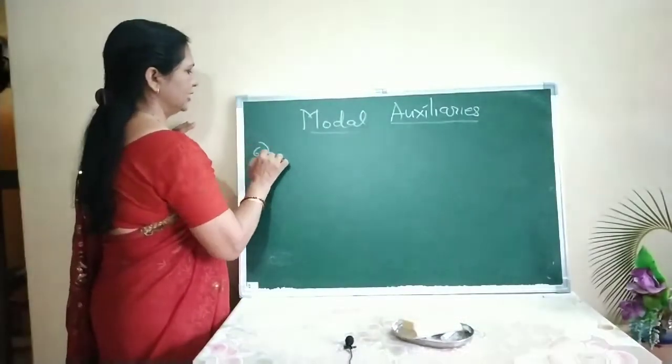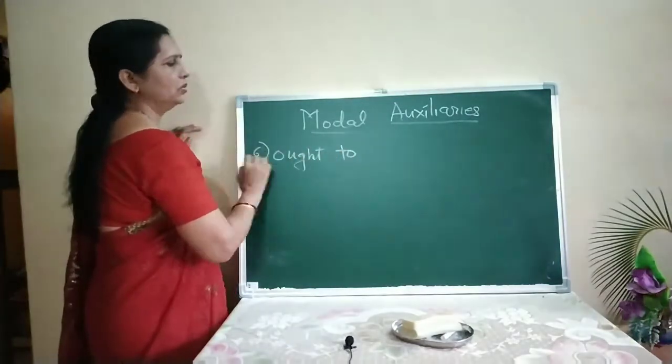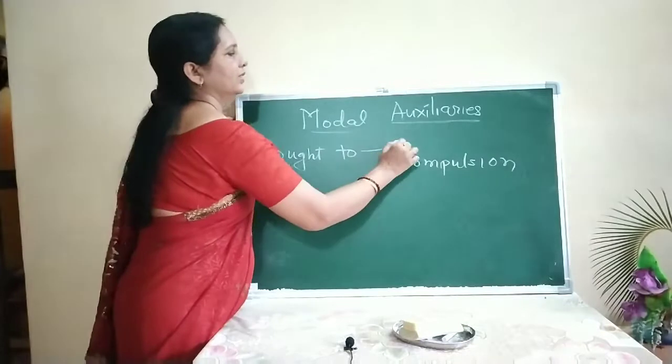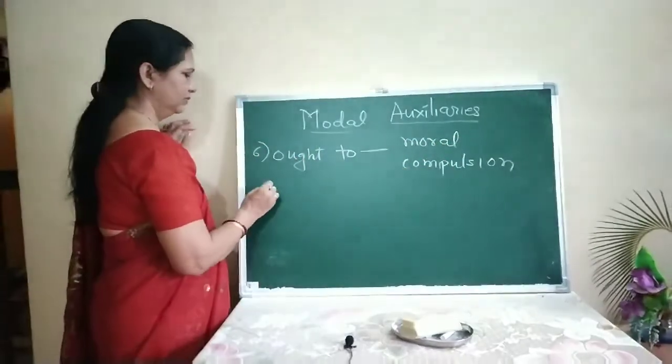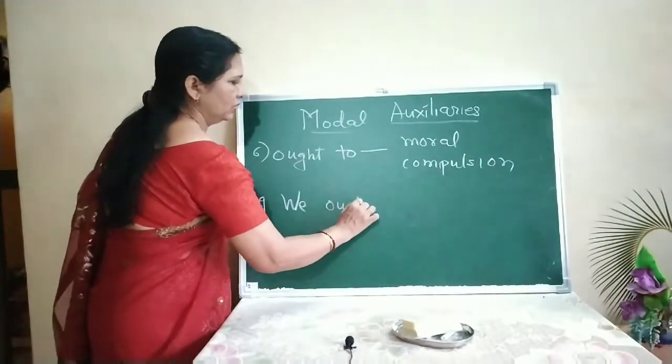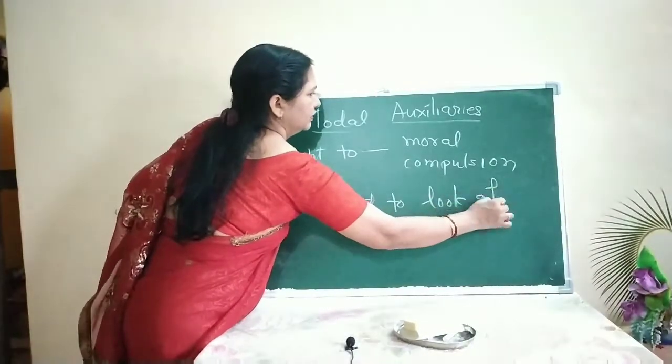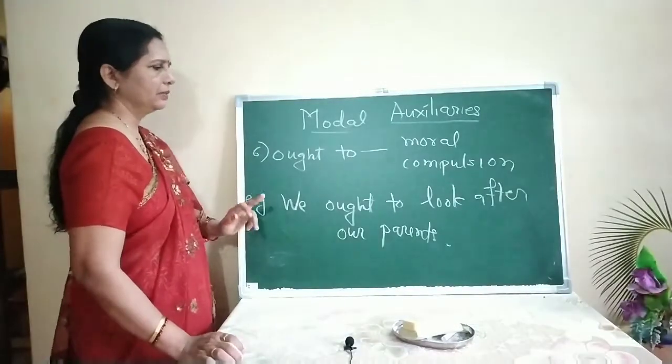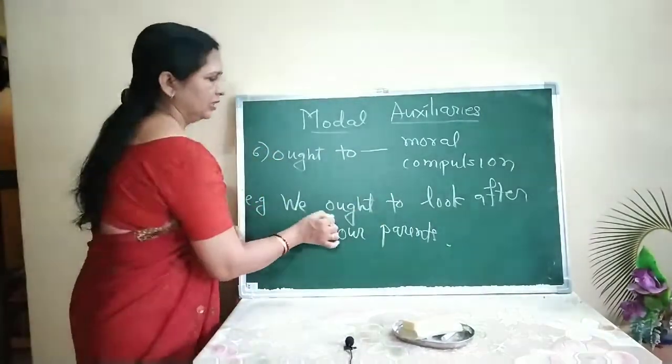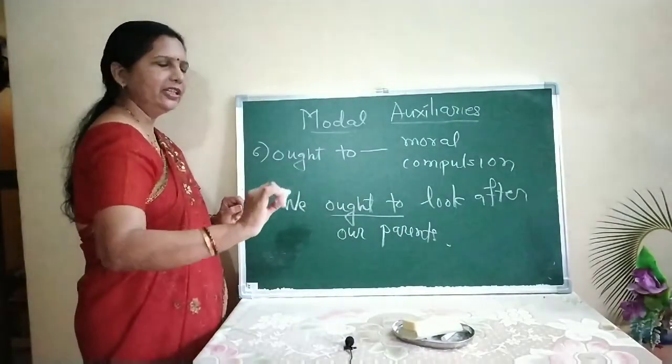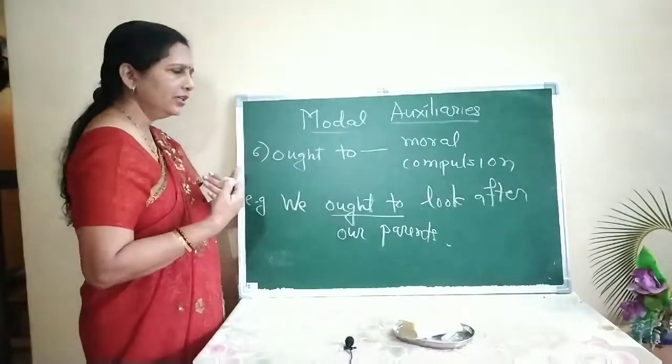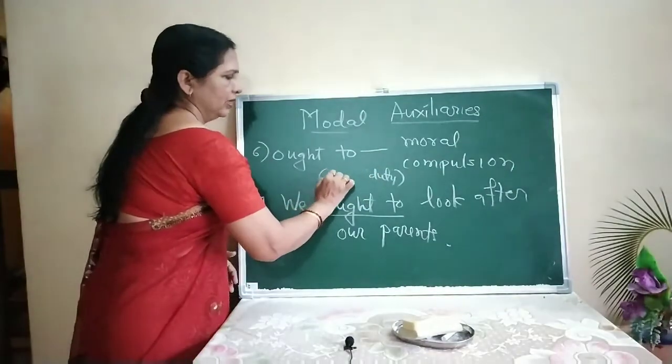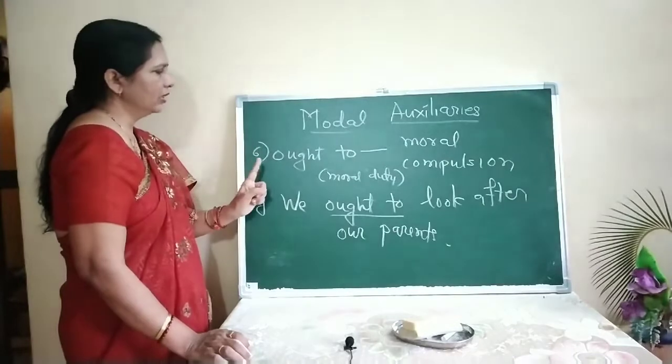Now, see the difference between must and ought to. In ought to also, there is compulsion. But there is a difference between must and ought to. That it is moral compulsion. For example, 'We ought to look after our parents.' There is no rule written anywhere. But it is our duty. So, when this sense of duty, moral duty, is there, we are using the modal auxiliary ought to.